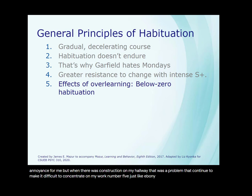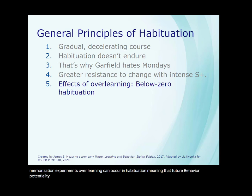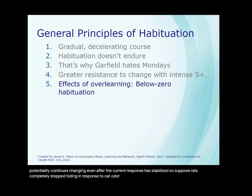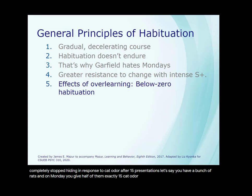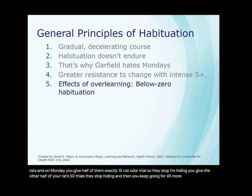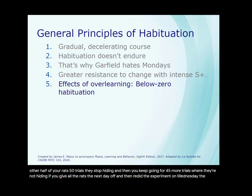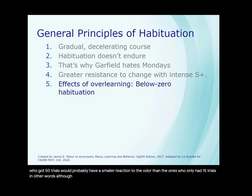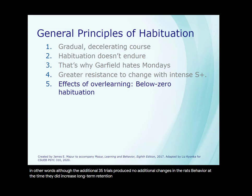Number five: just like Ebbinghaus found in his memorization experiments, over-learning can occur in habituation, meaning that future behavior potentiality continues changing even after the current response has stabilized. For example, if rats completely stopped hiding after 15 presentations of cat odor, and you gave half of them exactly 15 trials while the other half received 50 trials, the rats who got 50 trials would probably show a smaller reaction the next day. The additional 35 trials produced no immediate changes in behavior, but they did increase long-term retention of the habituation.